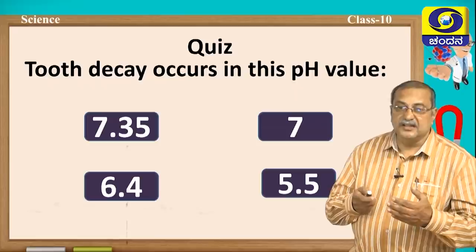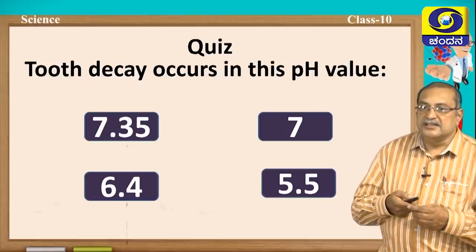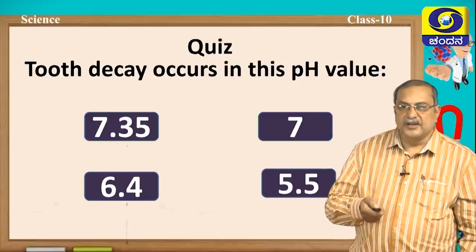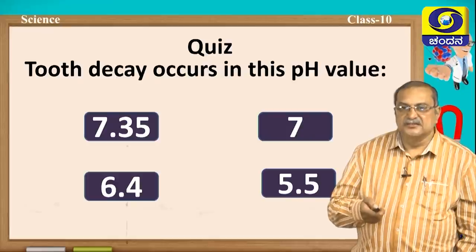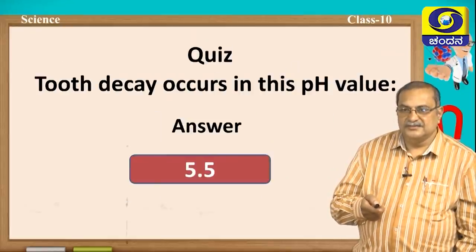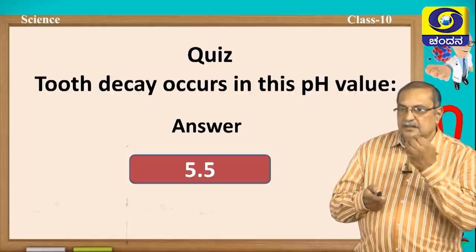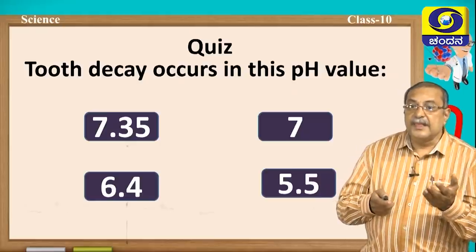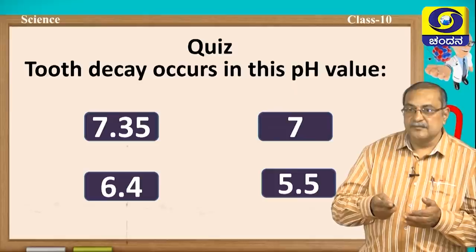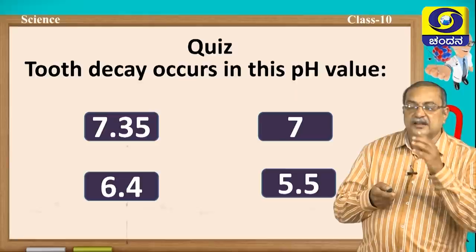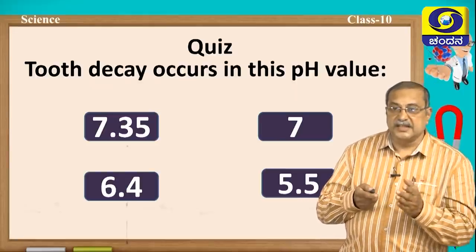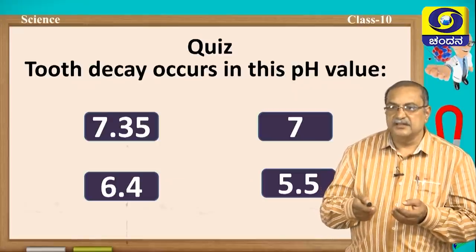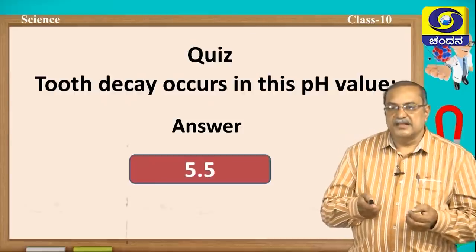Quiz time. Question 1: Tooth decay occurs at which pH value? Options: 7.35, 7, 6.4, 5.4. The answer is 5.5 — enamel is affected at pH less than 5.5. At 7.35 it is slightly basic, 7 is neutral, 6.4 is acidic, 5.4 is more acidic. Even the strongest part of the body — the enamel — is decayed in this acidic condition.